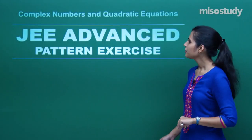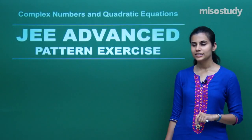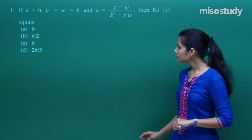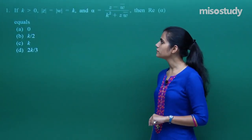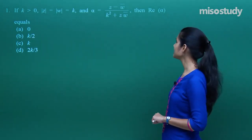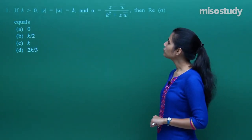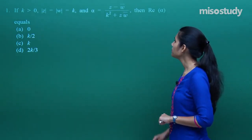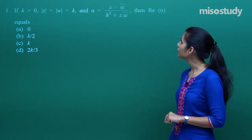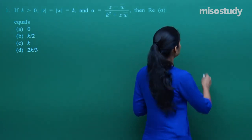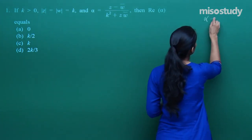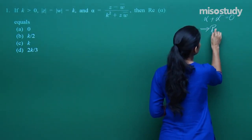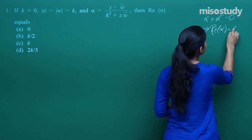Let us begin the discussion of JEE Advanced pattern exercises for complex numbers and quadratic equations. The first question states that modulus of z and modulus of w are exactly the same, equal to k, and alpha is given by (z minus w̄) upon (k² plus zw̄). Then the real part of alpha is what? The moment I show that alpha plus ᾱ is 0, this itself means that the real part of alpha is 0.